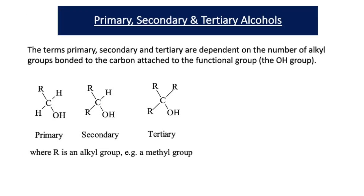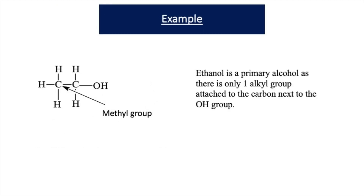In our previous video lessons, we discussed the difference between primary, secondary and tertiary alcohols. Primary alcohols have one alkyl group on the carbon next to the OH. Secondary alcohols have two alkyl groups on the carbon next to the OH. And tertiary alcohols have three alkyl groups on the carbon next to the OH. Primary, secondary and tertiary alcohols behave differently with oxidising agents, so it's important that you can recognise each type.